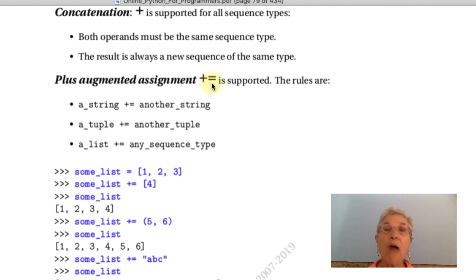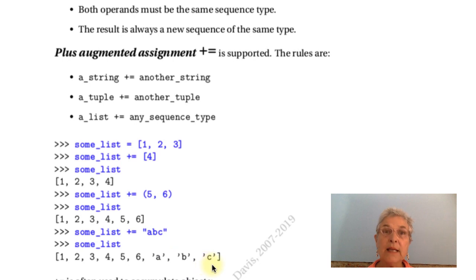Now the plus equals, the augmented assignment is just a little different. Here we can plus equals a string into a string, a tuple into a tuple, but with the list, you can plus equals any sequence type. Now that's our first vision of the fact that a list is very flexible. Here we have a list, and I am plus equalsing a list, a tuple, and a string. The elements get added into the list. That might be what you wanted. If you wanted the a, b, c to be all together in the list, you will like putting the square brackets around that to keep it as one element.